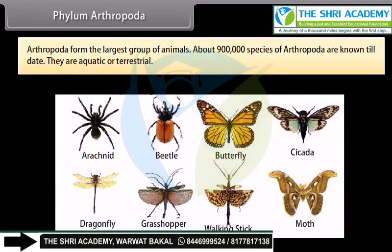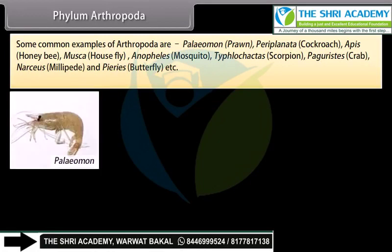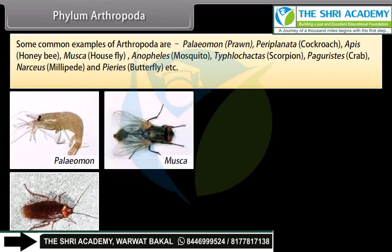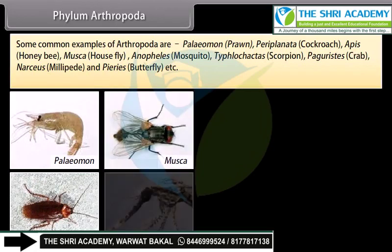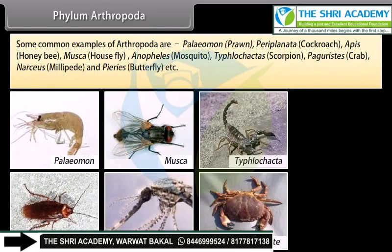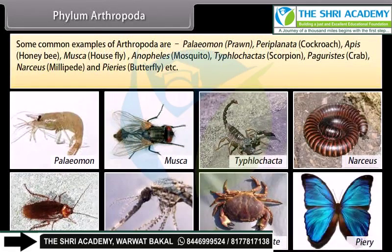Some common examples of Arthropoda are Palaemon (prawn), Periplaneta (cockroach), Apis (honeybee), Musca (housefly), Anopheles (mosquito), Tityus (scorpion), Pagurus (crab), Narceus (millipede), and Pieris (butterfly), etc.